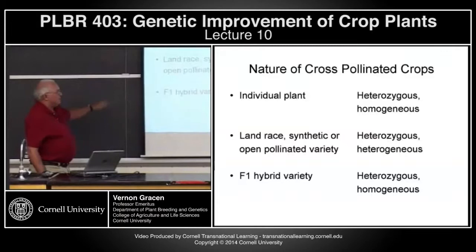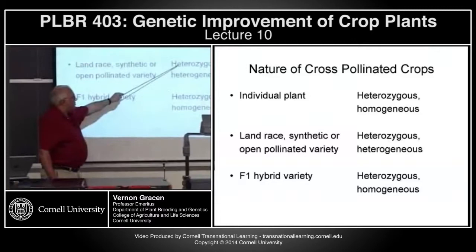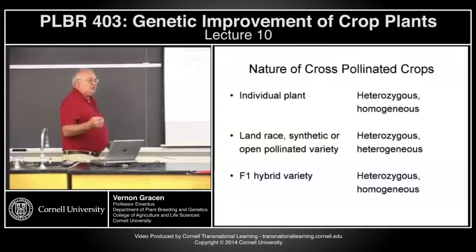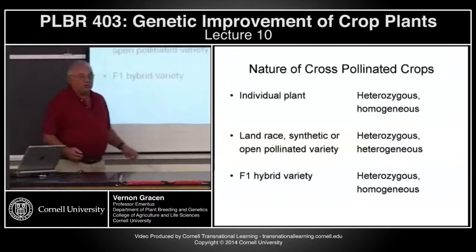If we're dealing with land races or open-pollinated varieties or synthetics of a cross-pollinated crop like maize, we're dealing with a population that's heterozygous and heterogeneous. Ultimately, we can go through a process to develop inbred lines and produce hybrids — F1 hybrid varieties, which are heterozygous but homogeneous.